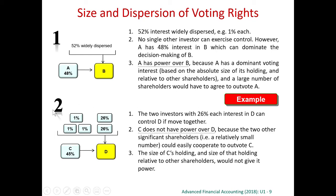In scenario 2, C has got 45% of D. 45% is not 50% or more, so we cannot say that C has the power. We consider other facts and circumstances. For the other 55%, there are 2 substantial shareholders, each with 26%. Even though the other 3% are widely dispersed, these 2 substantial shareholders can come together, and if they cooperate, they will win against C. Therefore, C cannot say they have power over D.